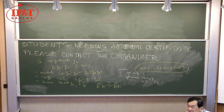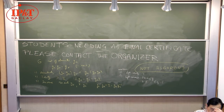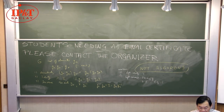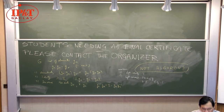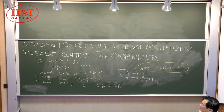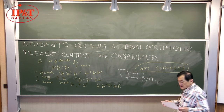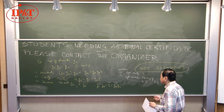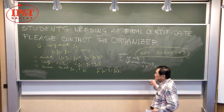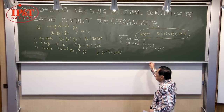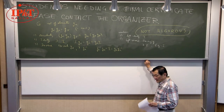In physics, the idea of a group comes out very naturally as transformation, because in physics we have the notion of transforming the laws of physics, and so transformations naturally obey the axioms of a group. I will start with a review of SU(N).